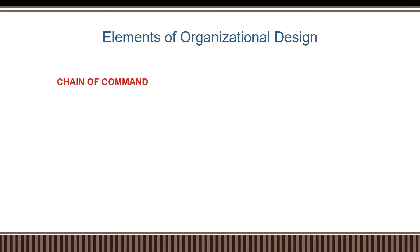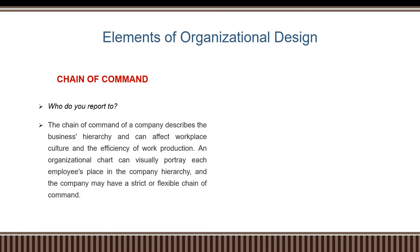We also have the chain of command, which answers the question: who do you report to? The chain of command describes the hierarchy within a company and can affect workplace culture and efficiency. For example, with a strict chain of command, each employee has a direct supervisor with an exception for the chief executive officer. In a more flexible chain of command, the owner may be the highest contact, then a manager or two in the middle, with the rest of the employees ranking under the managers.